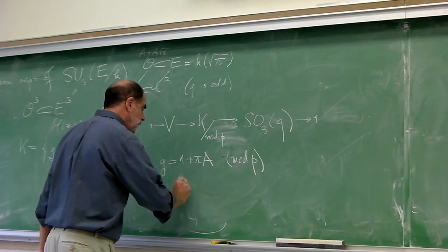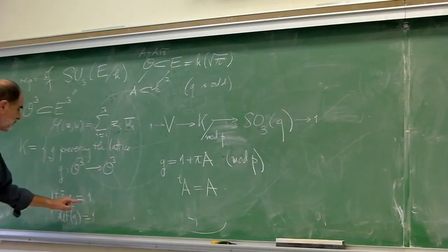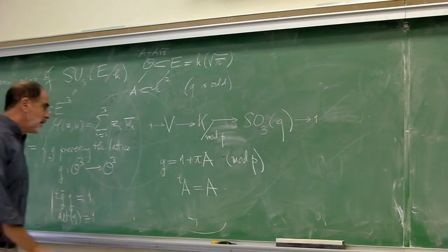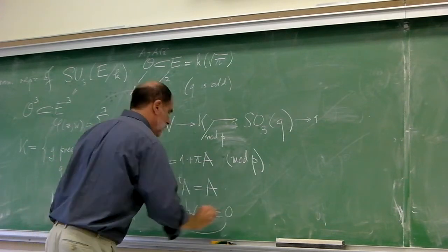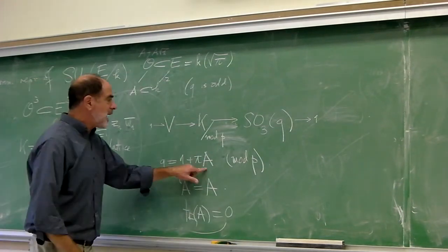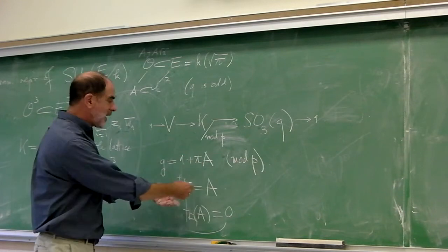That A transpose is equal to A. That's A plus A transpose is equal to 0. And then you get that the trace of A is equal to 0. So these are matrices A mod pi, which have this property.